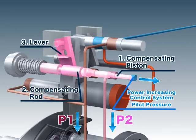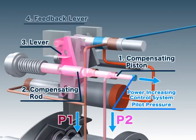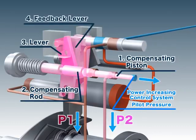As the compensating rod moves, the lever rotates, moving the feedback lever, which in turn moves the spool.